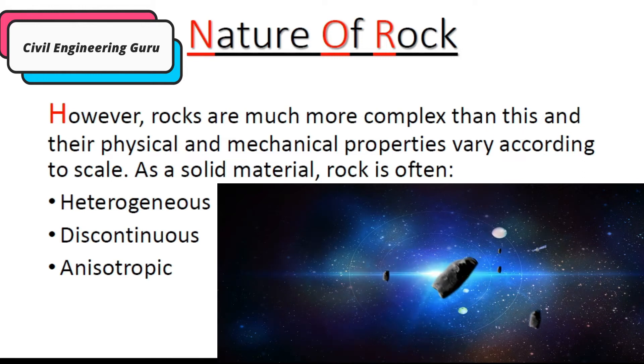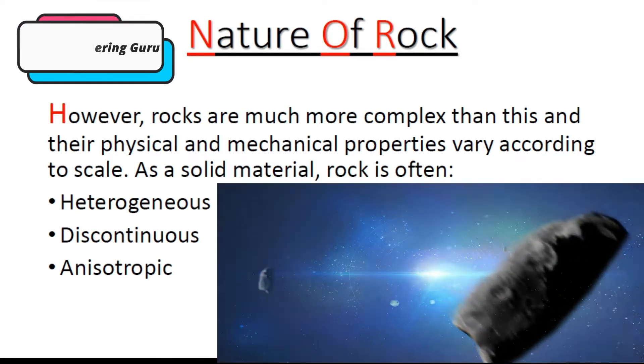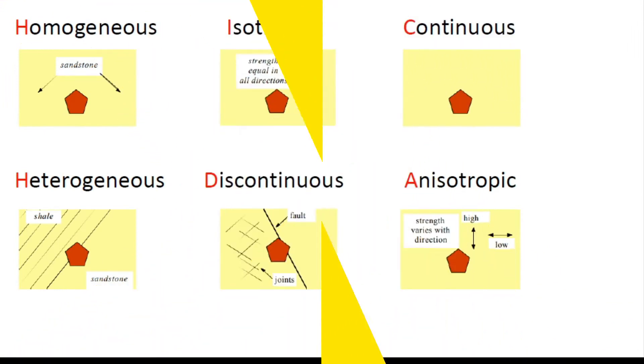As a solid material, rock is often heterogeneous, discontinuous, and anisotropic. To differentiate between rocks, refer to the table of rock types and see the diagrams of different forms.